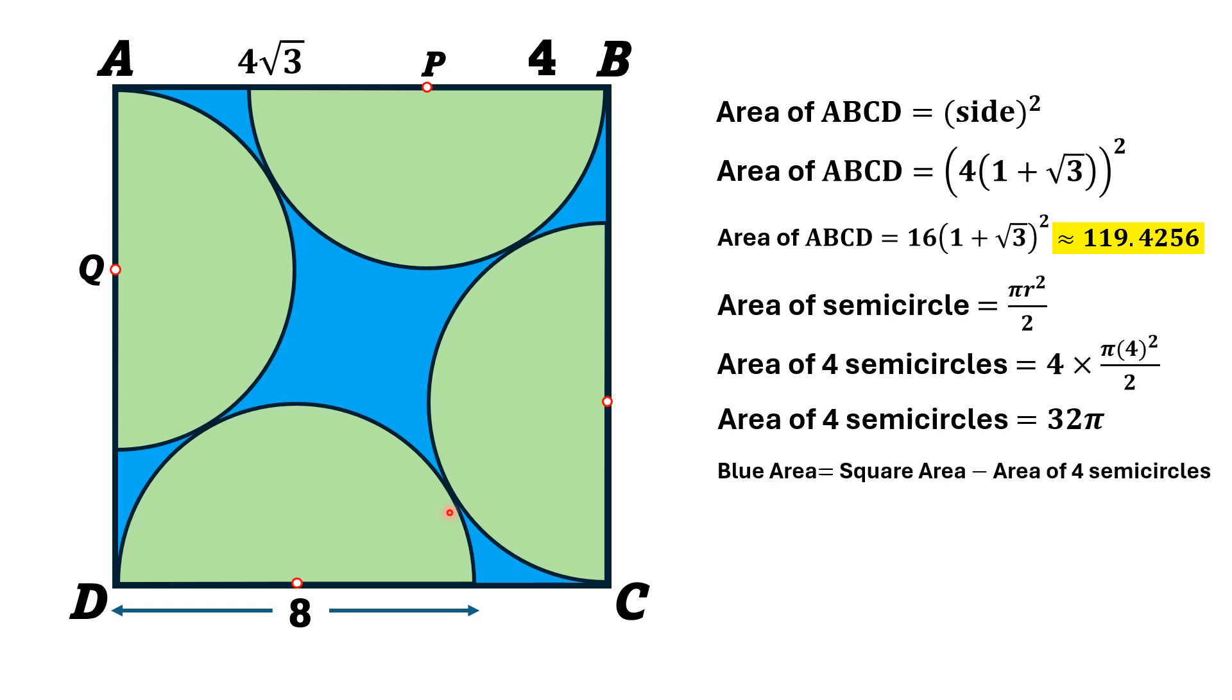Now, area of blue shaded region is equal to the area of this square minus area of these four semicircles, so area of square is 119.4256 and area of four semicircle is equal to 32 pi. Now, this after simplification gives us that blue shaded area is equal to 18.8947 square units.